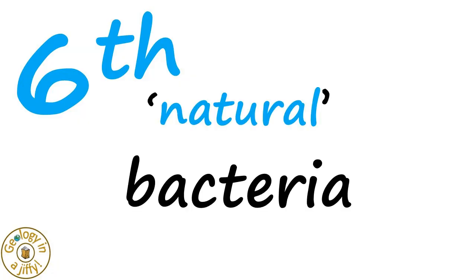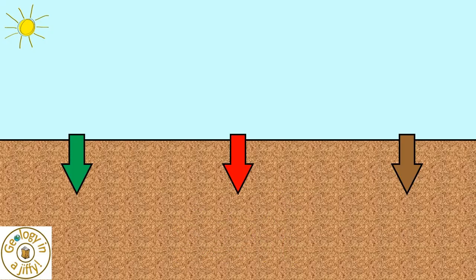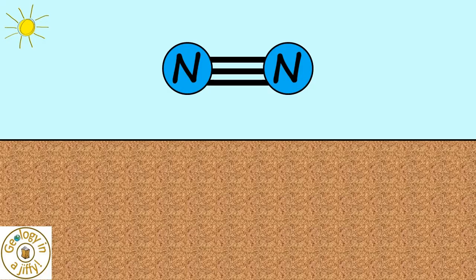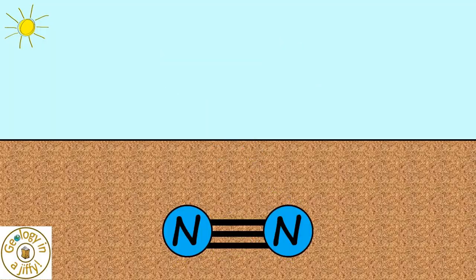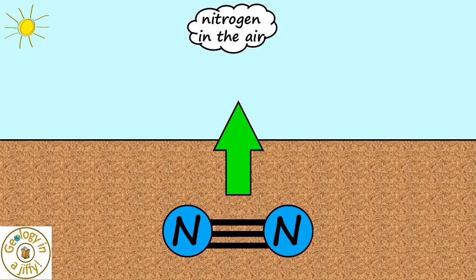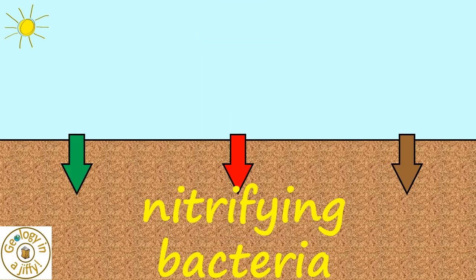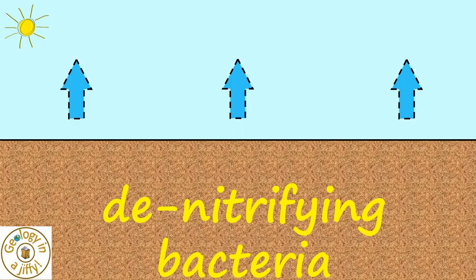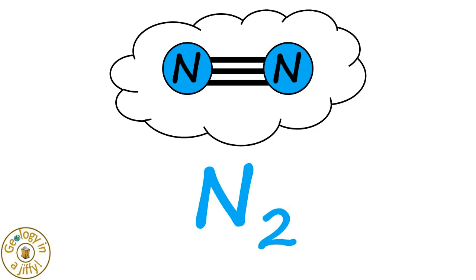The sixth and last way is also natural and again uses bacteria that live in the soil and help the nitrogen from the decaying materials be absorbed into the soil — these bacteria called nitrifying bacteria. We have six different ways to get nitrogen from the air into the soil, but there is only one way to move the nitrogen from the soil back into the air: instead of nitrifying bacteria, the denitrifying bacteria help break down nitrogen compounds in the soil, releasing nitrogen into the air.